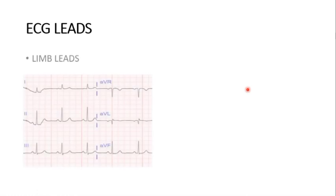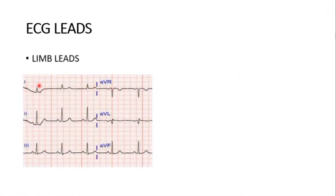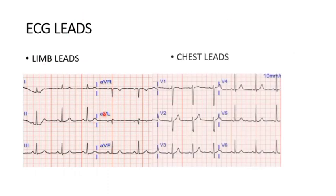There are six limb leads: AVR, AVL, AVF, and their potential differences — Lead 1, 2, and 3. These are placed from top to bottom. Then there are six chest leads, also called precordial leads — placed in front of the heart. These are V1, V2, V3, V4, V5, and V6, placed at their respective locations as mentioned.